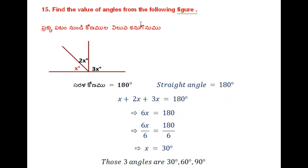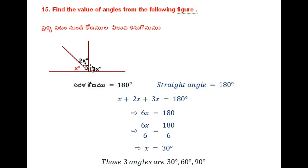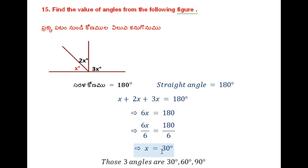15th problem: Find the value of angles from the given figure. Here it is a straight angle. By adding all these angles: x plus 2x plus 3x — the sum of these 3 angles is equal to 180 degrees. So 6x is equal to 180. Dividing by 6 on both sides — x is equal to 30.